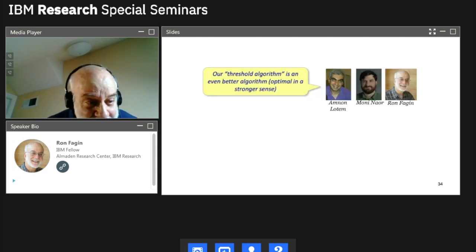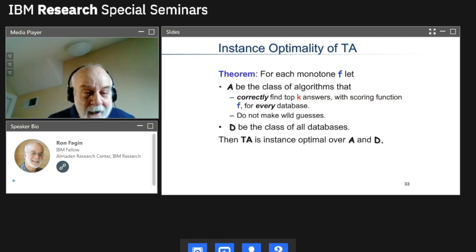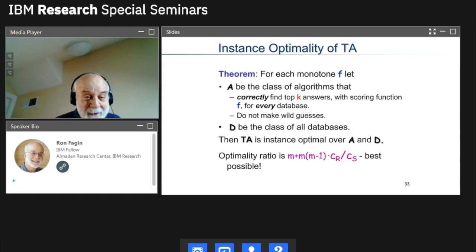So now, the late David Johnson came to my office one day, and I very proudly told him this theorem about instance optimality. And he said, you know, Ron, he said, I would have a sterner notion of instance optimality. Not only the stuff you say, but it's got to have the best possible optimality ratio, that constant C1. I thought, oh, man, that's an interesting, hard problem. So I went back to my office the next day, and I found the optimality ratio. It's this complicated thing. M is the number of lists, like two of its radius around us. C sub R is the cost of random access. C sub S is the cost of sorted access. This is the optimality ratio for the threshold algorithm. And I proved it's best possible. So it's among all instance optimal algorithms. So it's as optimal in that strong David Johnson sense.